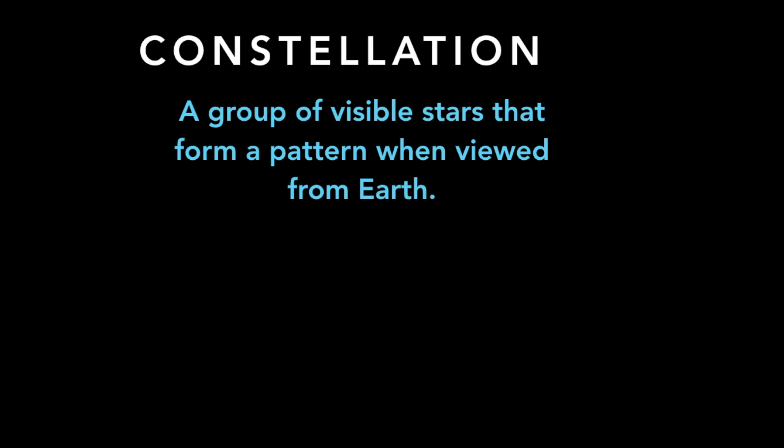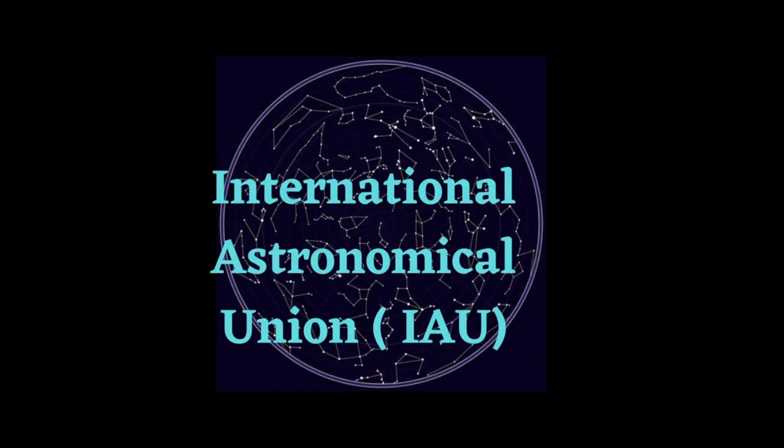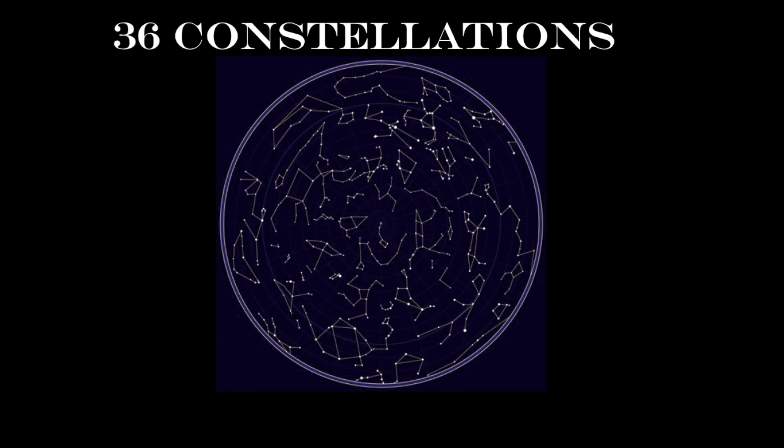This group of stars are located or found in constellation maps which represent the position of the stars as we see them from Earth. Constellation maps divide the celestial sphere into 88 constellations. Out of 88 constellations recognized by International Astronomical Union or IAU, there are 36 constellations found in the northern sky and 52 are located in the southern sky.